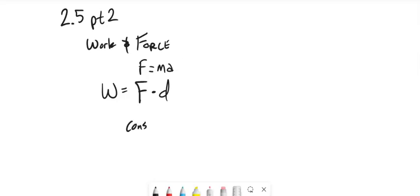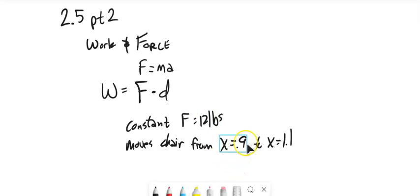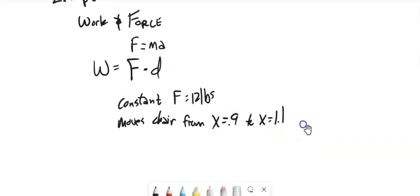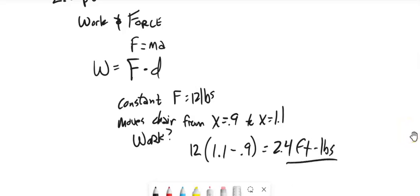For example, if we have a constant force of 12 pounds that moves a chair from x=0.9 feet to x=1.1 feet, how much work was done? Since it's constant, it's the same force over that distance, so we multiply the distance times the force: 12(1.1 - 0.9) = 2.4 foot-pounds.